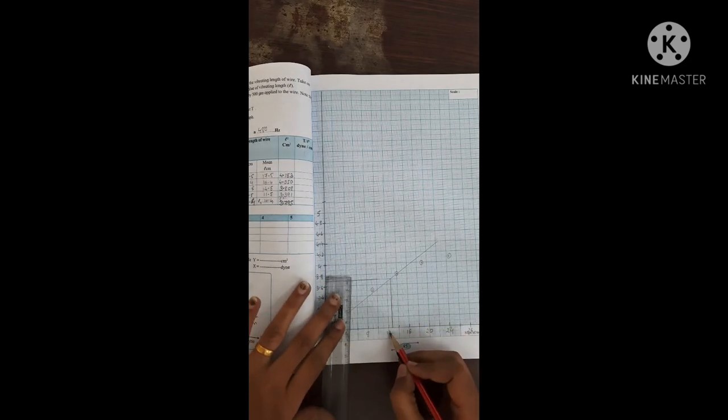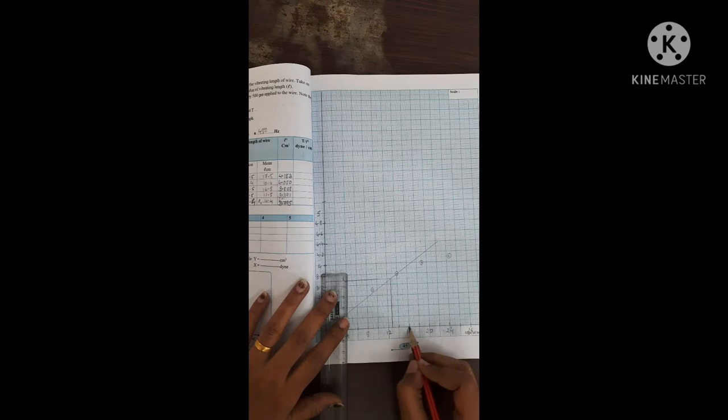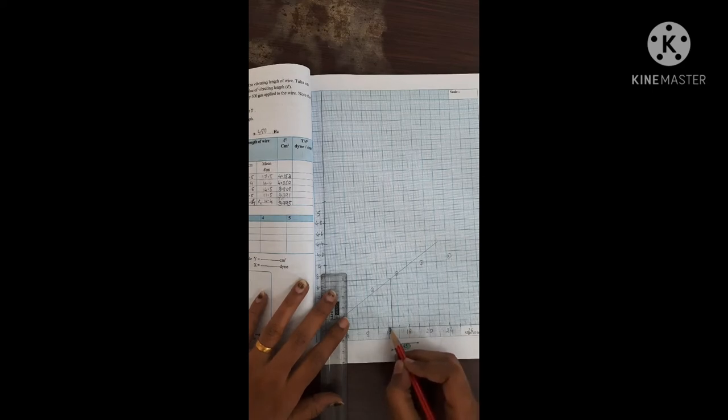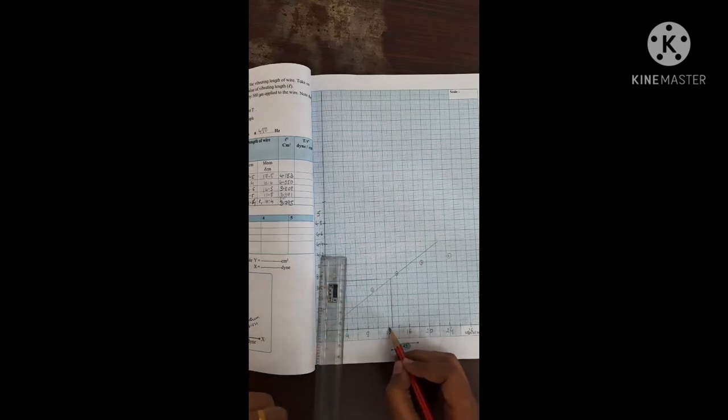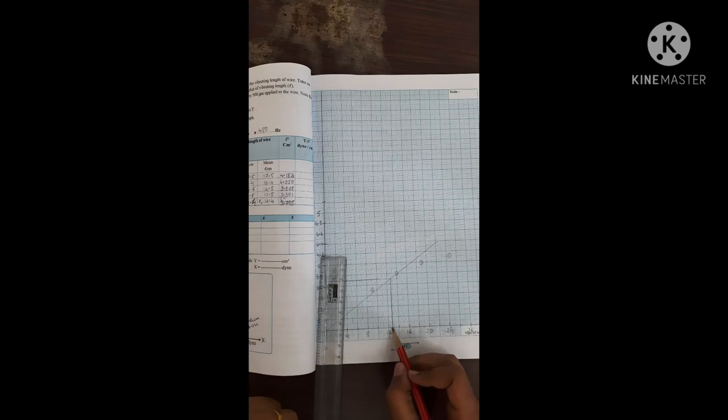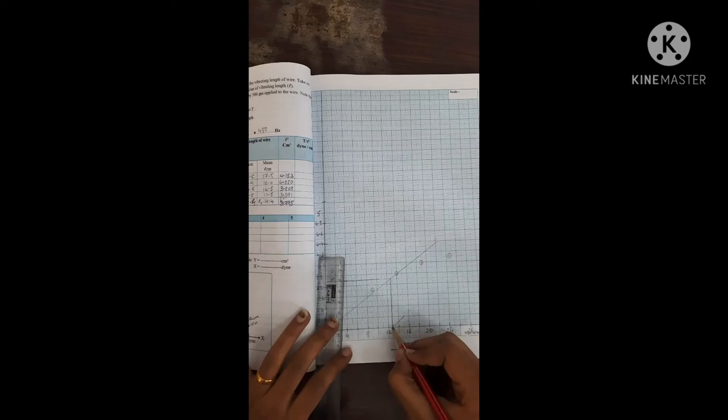And this much is 12, 13, 14, 15, and 16. So my one box will be is equal to about 2. Small box. So this is about fourth line, so this will be 12.8. So this is my unknown tension, unknown tension.